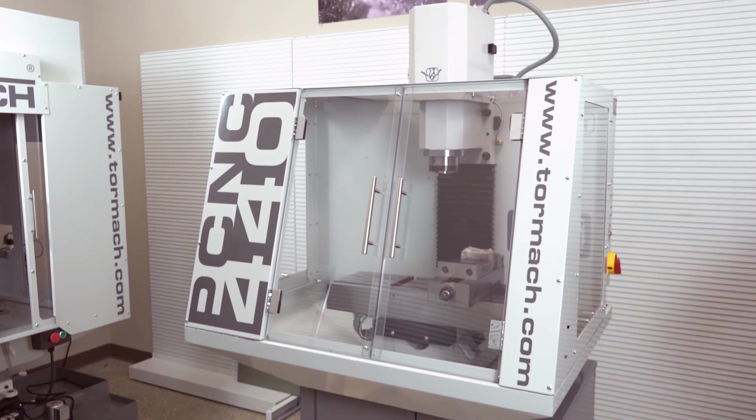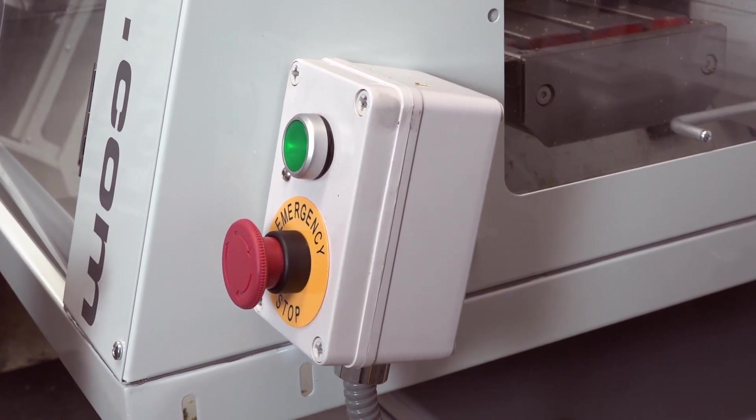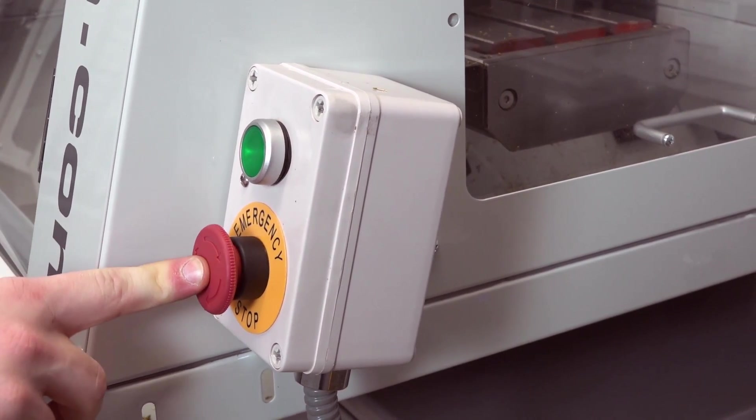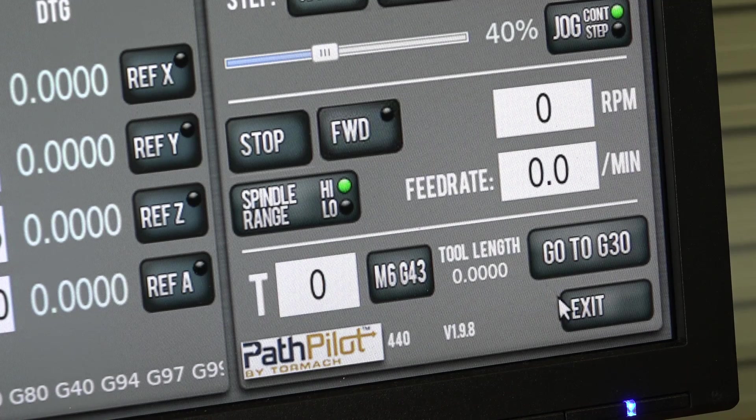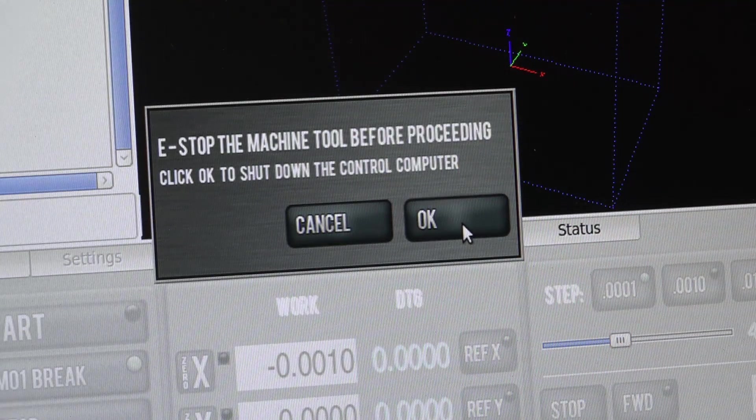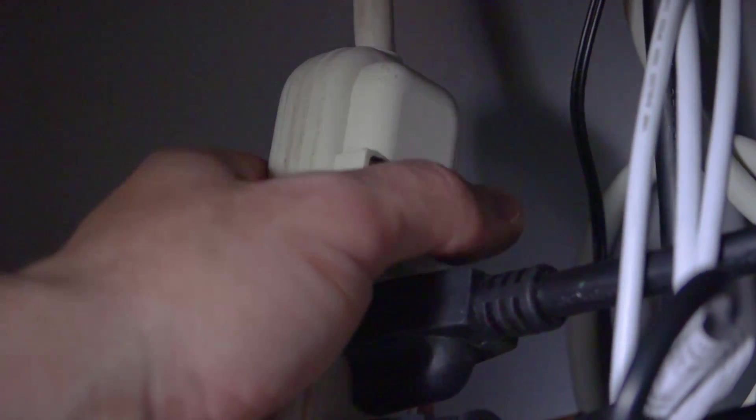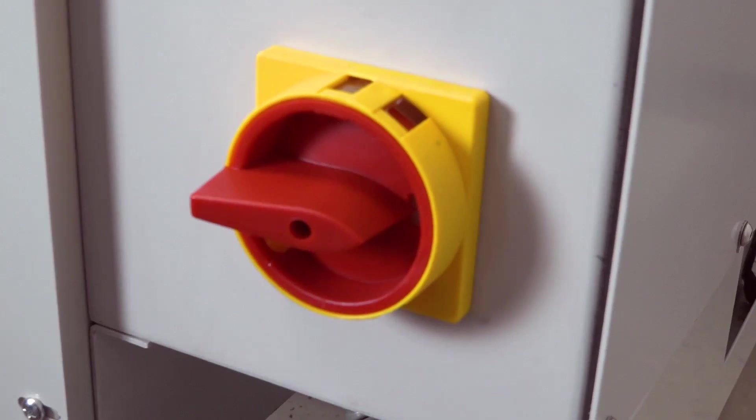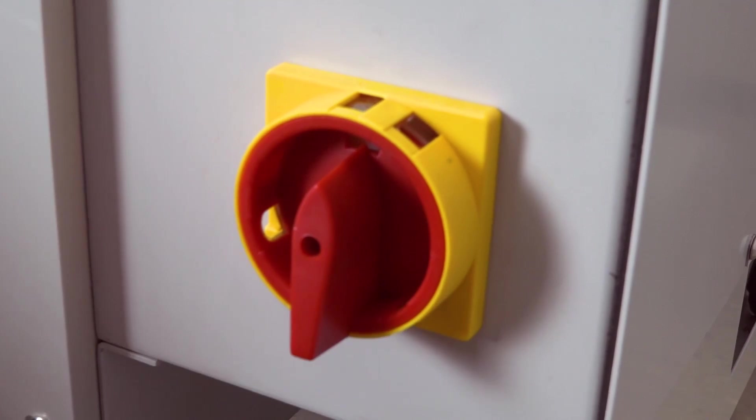To prevent the risk of an electrical shock, power to the mill must be removed before proceeding. Push in the red e-stop button, click Exit on the PathPilot screen, click OK to power off, turn the PathPilot controller power strip off, turn the main disconnect to off.